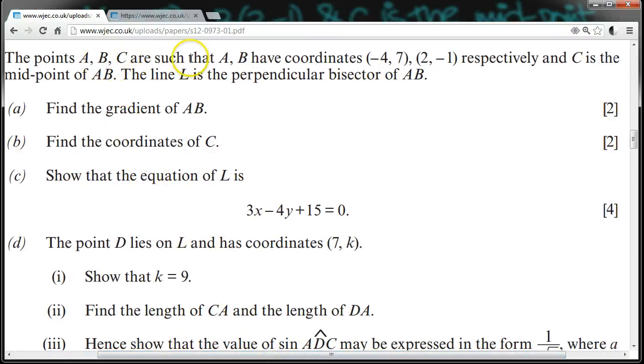The points A, B, and C are such that A and B have coordinates (-4, 7) and (2, -1) respectively, and C is the midpoint of AB. The line L is the perpendicular bisector of AB.